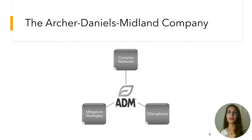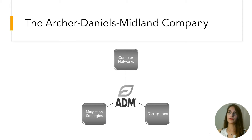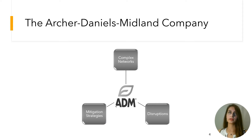ADM's supply chain has a complex network including over 220 grain elevators, 23 milling facilities, and 62 agricultural services processing plants. It experiences multiple disruptions at multiple echelons. Disruptions at grain elevators include sudden changes in grain prices, transportation costs, and weather-related grain availability. Disruptions at milling facilities include unexpected downtime, shifts in product demand — for example, shifts caused by COVID-19 in restaurant and grocery store demand — and production recalls.